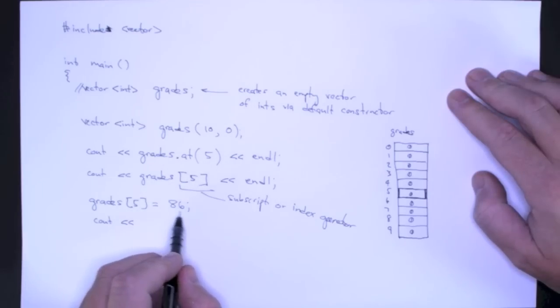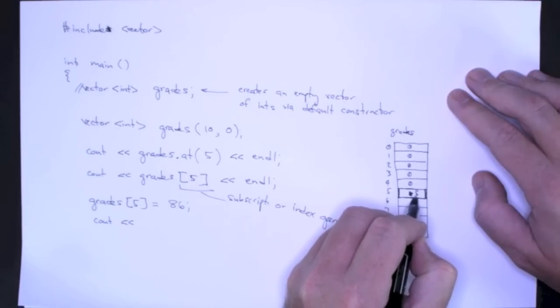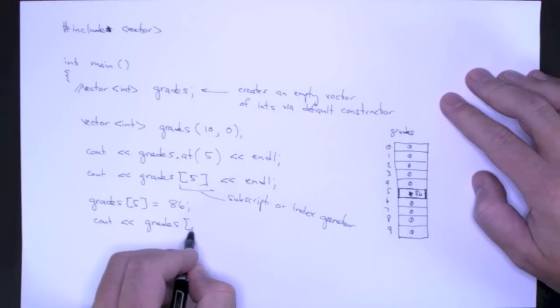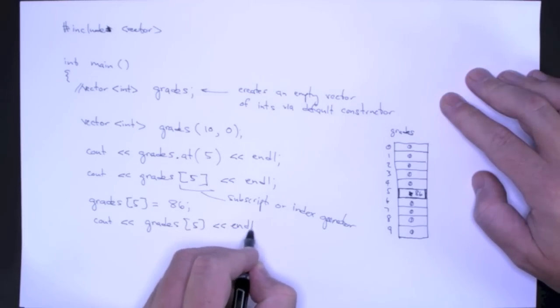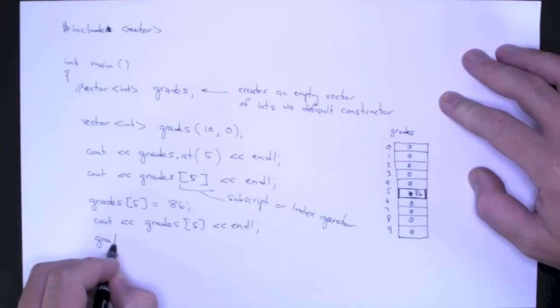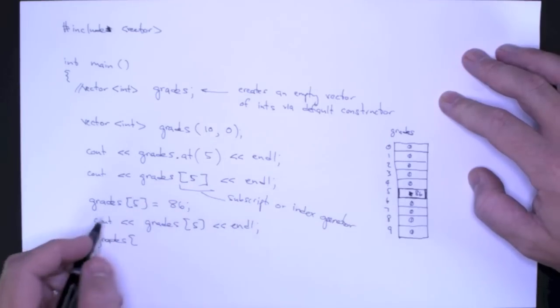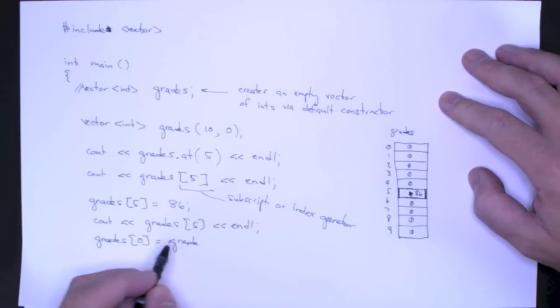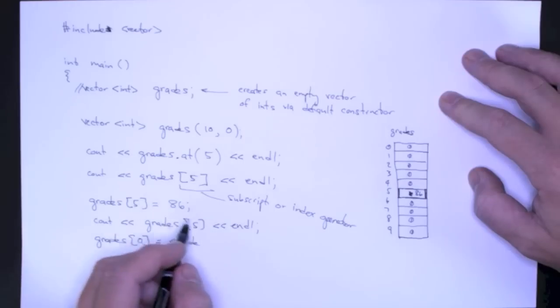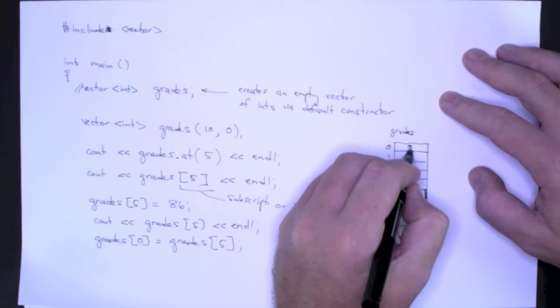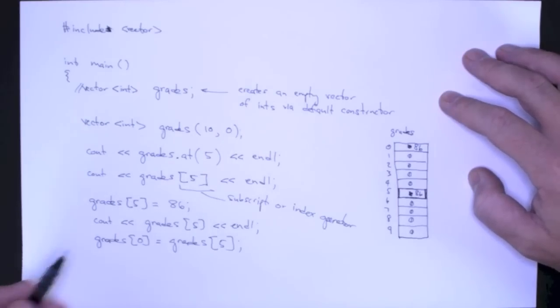I'm storing the value 86 in location 5. So I'm replacing 0 and storing 86, and now when I refer to that, I'll print 86. And of course, all of these evaluate to integers, so I can also make assignments. This will illustrate some of the power of a vector. I can also assign elements to other elements. So if I want to store in position 0, the first position, the grade that I just assigned to position 5, then I can write an assignment like that. So I can swap elements very easily, and now this will replace 0 with 86.